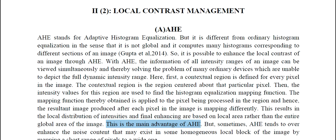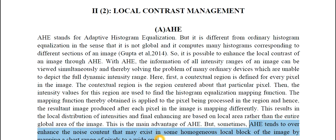There exists one disadvantage of Adaptive Histogram Equalization: sometimes AHE tends to over-enhance the noise content that may exist in some homogeneous local block of the image, by mapping a short range of pixels to a wide range. You should note how AHE tends to amplify noise in a particular region. Noise usually differs from a normal pixel because its intensity range may be too high. So when we try to equalize the intensities in that particular region containing noise, the other values also get affected, and in that way some amplification of noise occurs in that local region.